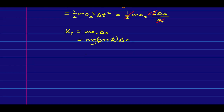What I've just shown is that K_f equals mg — the magnitude of the gravitational force — times delta x, which is the magnitude of the force displacement vector, times cos phi, where phi is the angle between the force and the force displacement vector. And so that is the work done by this force acting at an angle phi to the direction of motion.